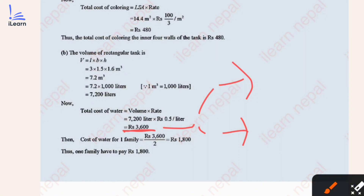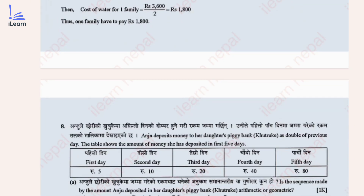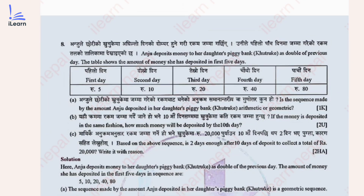The cost of water for one family is 3,600 divided by 2 = Rs 1,800. This is how we solve this question. We have another question in the series.